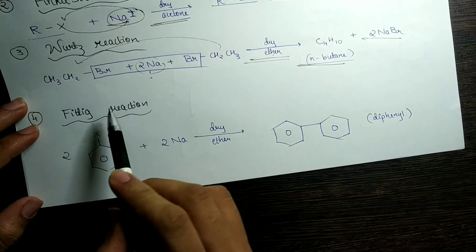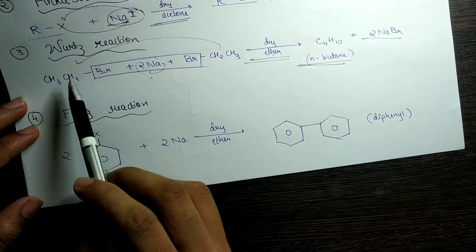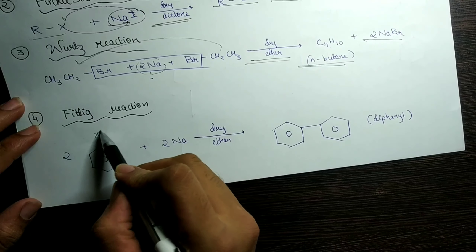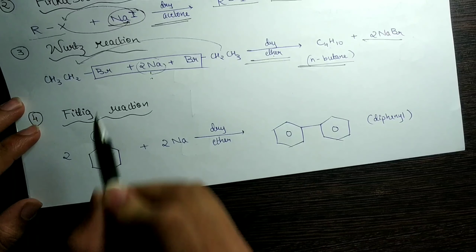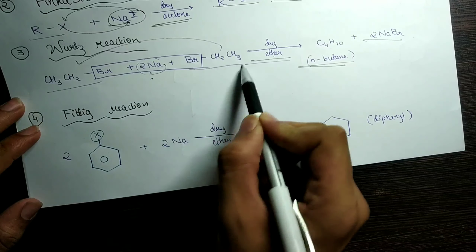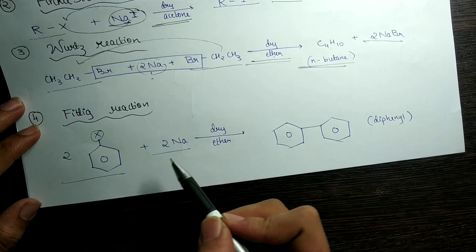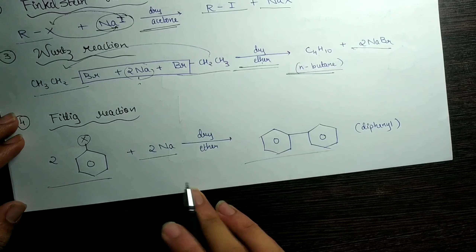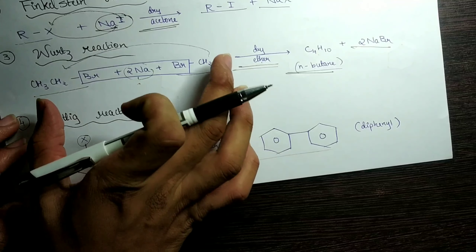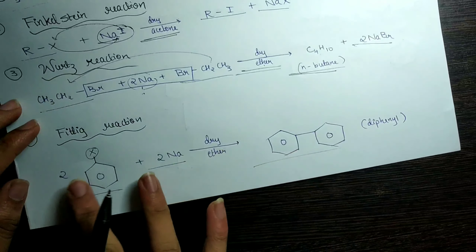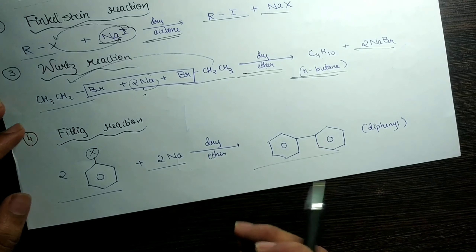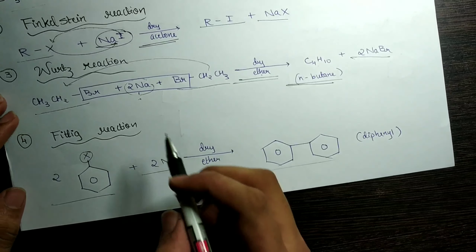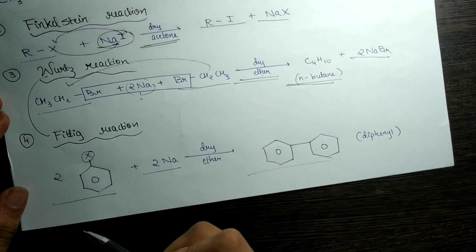The next is something similar, but instead of AgF we have sodium iodide — that is NaI. The same haloalkane is taken, and we need a medium for this reaction to take place, which is diacetone. The same thing happens: I comes here and X comes here, so NaX + RI. These are all preparations of a different haloalkane from another haloalkane. This is the Finkelstein reaction.